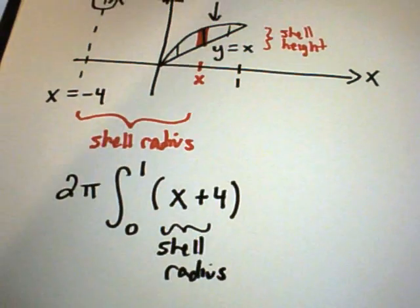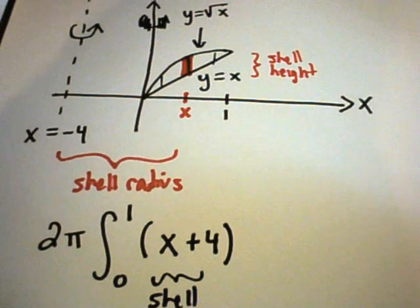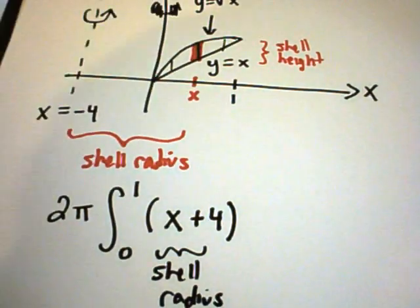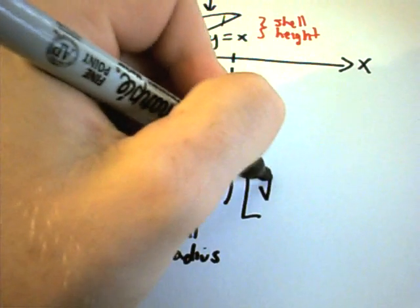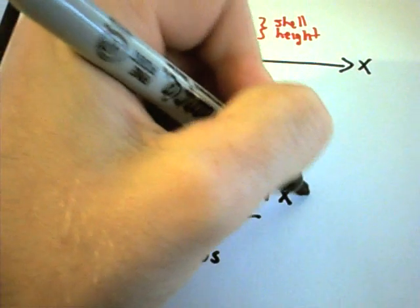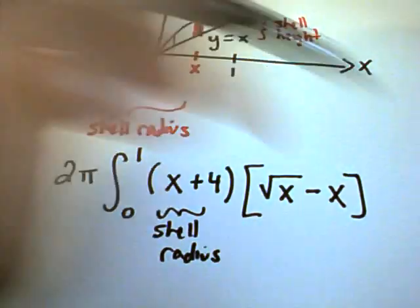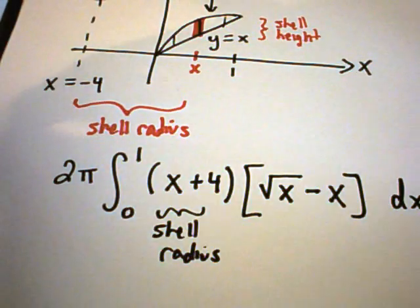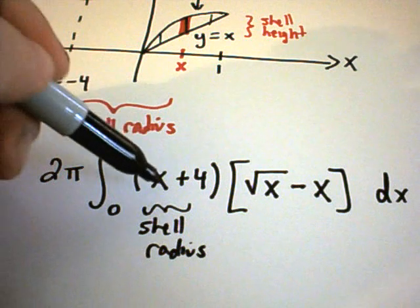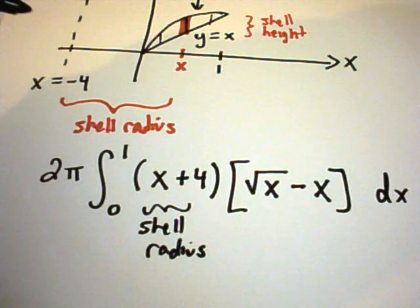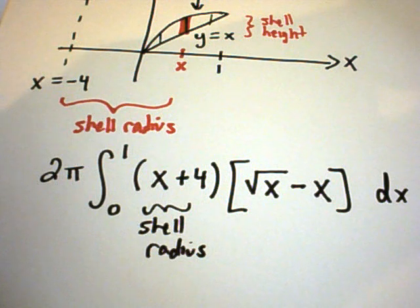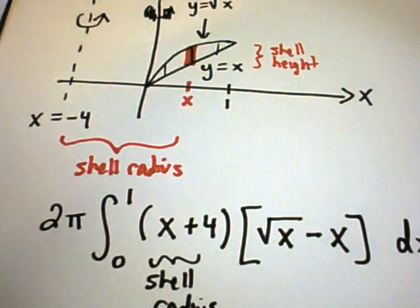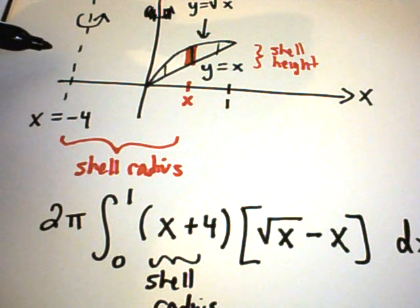The shell height — basically, if you think about finding areas between curves, you just take the top curve minus the bottom curve, which is exactly what we're going to do. So the shell height is simply going to be square root of x, because that's the top curve, minus x. This integral is a little tedious — multiply it all out — but you'll have x to various powers and can use the basic power rule when you integrate. That's the setup for rotating this region about the line x equals negative 4.